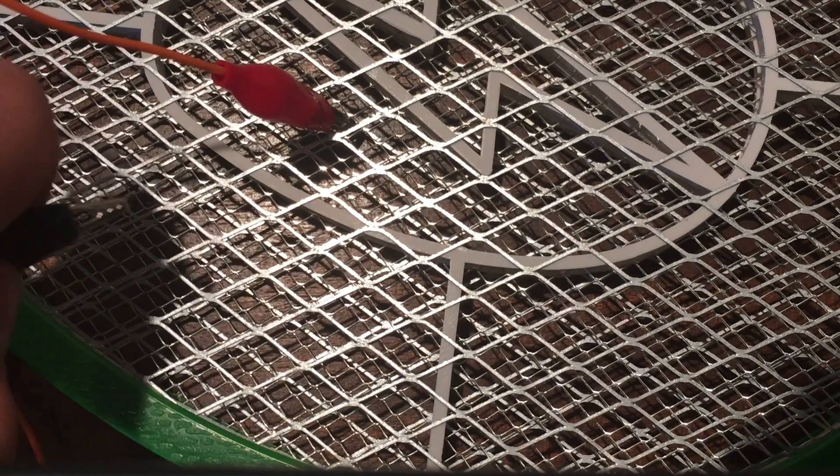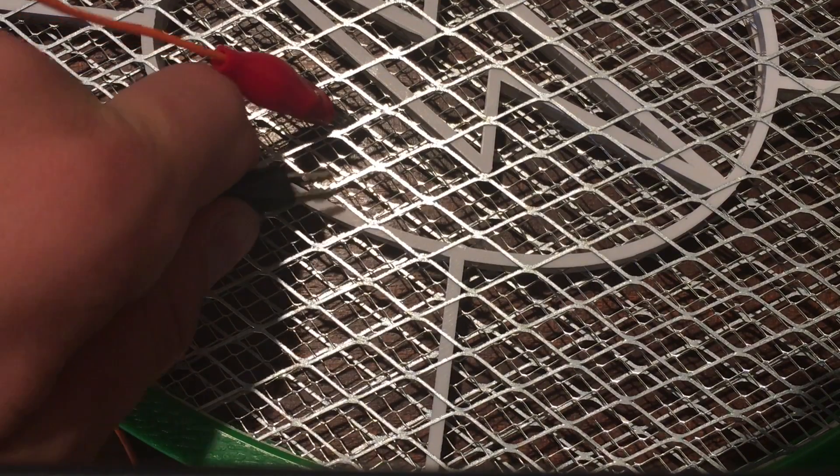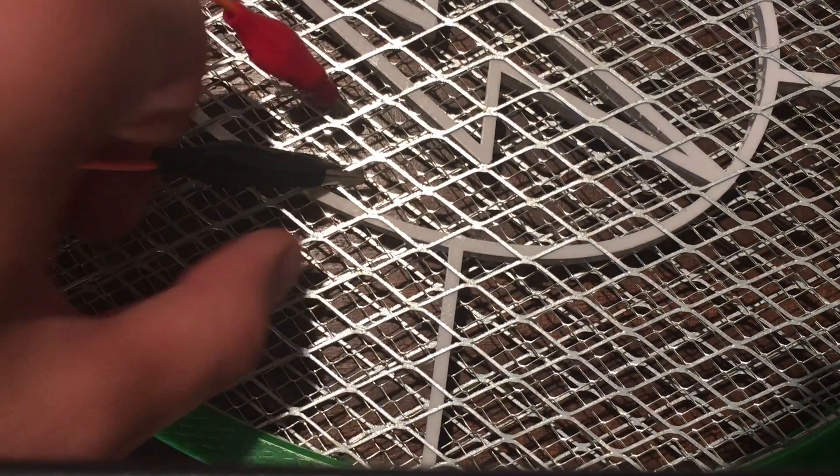To start off with, take an alligator clip on the end of a wire and connect it to the center mesh of the electric fly swatter. Then take another piece of wire and connect it to the outer mesh, making sure that the two meshes and alligator clips don't touch.